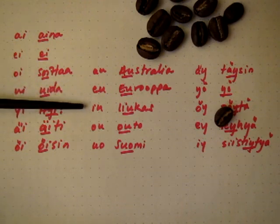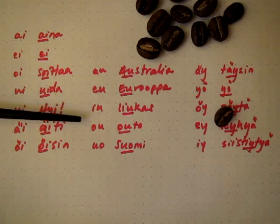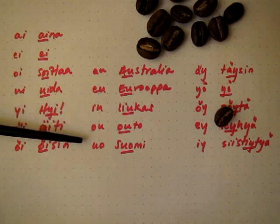Iu, iu, liukas, liukas. Ou, ou, outo, outo.